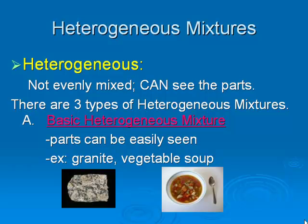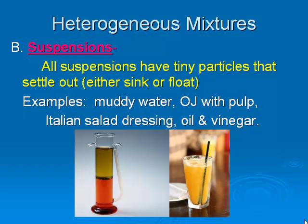In the picture on the left you see granite, which is a kind of rock. It's very easy to see all the different kinds of minerals mixed together to make up that rock. Same thing with vegetable soup — the particles are pretty big and you can easily see all the parts. The second category is called suspensions. You can still see the parts, but they're a little bit smaller — little particles that either float or sink. Things like muddy water, orange juice with pulp, Italian salad dressing, and oil and vinegar are considered suspensions.